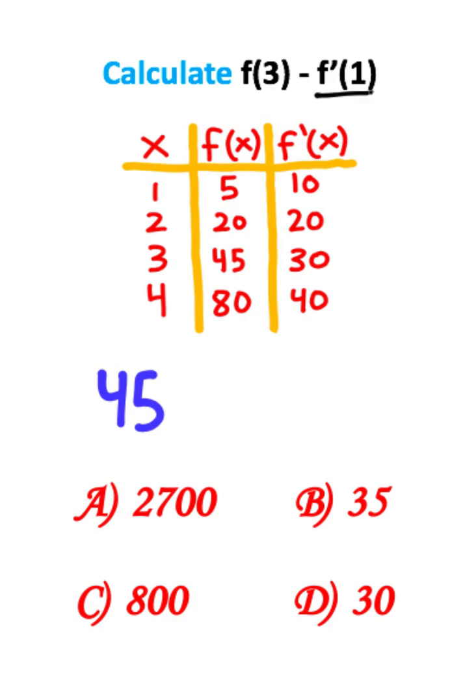Now what I'm going to do is evaluate f prime of one. So I can go to my function f prime of x, and find where x is equal to one. If I go to this column and this row, we end up at 10.